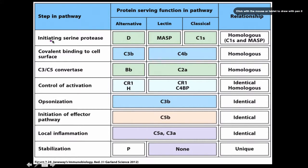What initiates the serine protease in all three pathways: in the alternative pathway it's Factor D — remember it's like an axe that cleaves it. In the lectin pathway it's MASP, which cleaves itself. In the classical pathway it is C1S. This diagram shows the relationship where C1S and MASP are homologous.